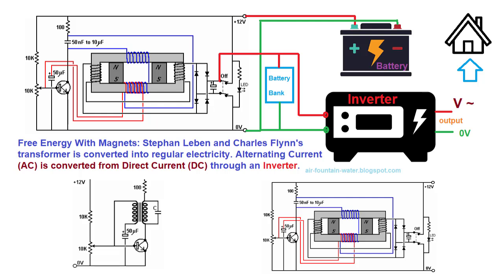Replicating this device demands meticulous experimentation with the number of turns in each coil and the wire diameter to carry the desired current. Levin advises that the black output coils must have at least twice the weight of copper as the blue input coils to enable the generation of excess power. As a relatively recent circuit release, the absence of widespread replications poses a challenge, underscoring the need for further exploration and validation.